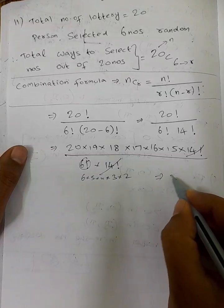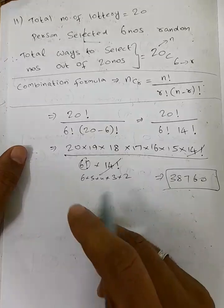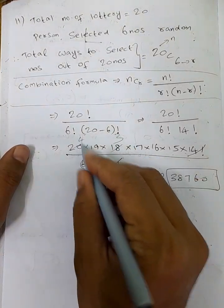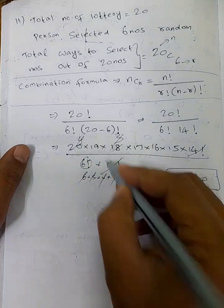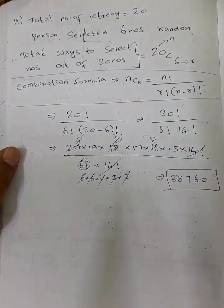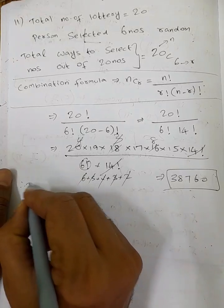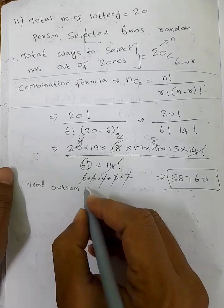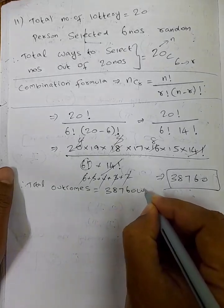So the 6 factorial is 6 into 5 into 4 into 3 into 2. Simplify: 4 cancels, 3 cancels, 2 cancels, and continuing to cancel terms until we get the final value.